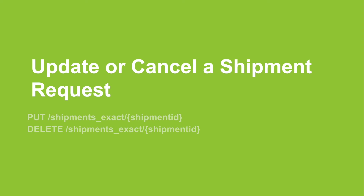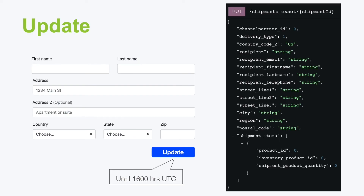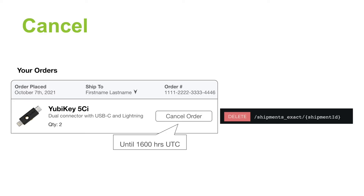You can update or cancel shipment requests. Updating a shipment request is very similar to creating one — you'll just need to specify the shipment ID in the URL. Note that shipment requests are only editable until 1600 hours UTC when processing begins. You can also cancel a shipment request by calling DELETE on the ShipmentsExact resource with the shipment ID. Again, this is only available until 1600 hours UTC.